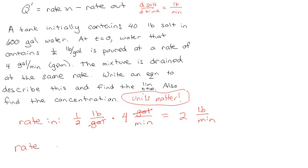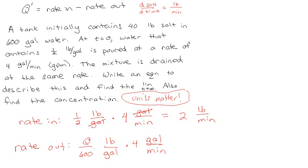The rate out is a different story, because you don't actually know what the pounds per gallon of the mixture is anymore. You know it's still going out at four gallons per minute, but you don't know what the pounds per gallon is at any given time. We've decided that Q is going to be how much salt we have — Q pounds of salt in 600 gallons of water. We don't know what Q is — that's the point. This is a Diffy Q class.